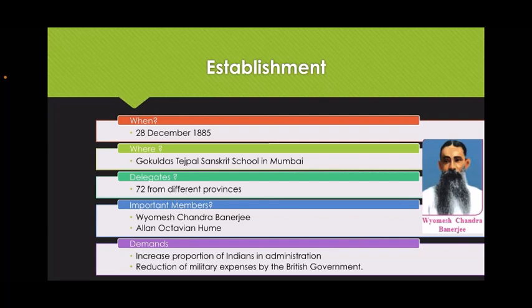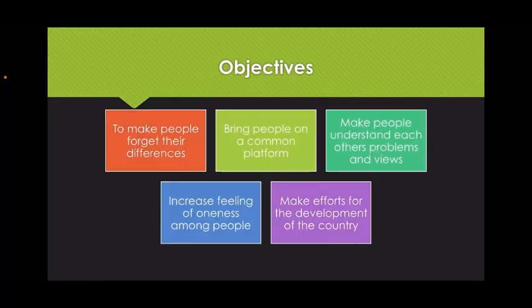The demands made by the Indian National Congress included increased proportion of Indians in administration and reduction of military expenses by the British government. The objectives of the Indian National Congress were to make people forget their differences, bring people on a common platform, make people understand each other's problems, increase the feeling of oneness, and make efforts for the development of the country.